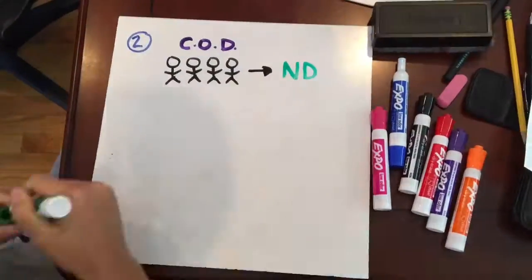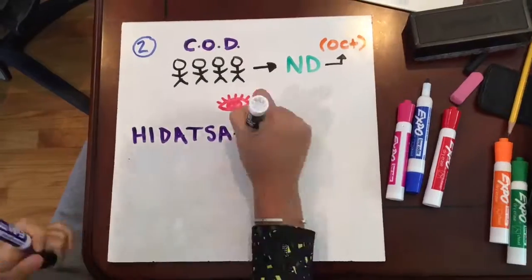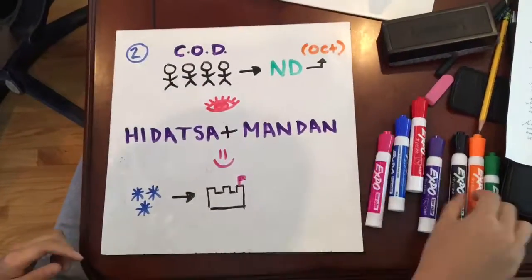In late October, the Corps reached North Dakota and befriended a tribe of Hidatsa and Mandan Native Americans. Because winter was coming, they decided to stay and build a fort, Fort Mandan, near the tribe.